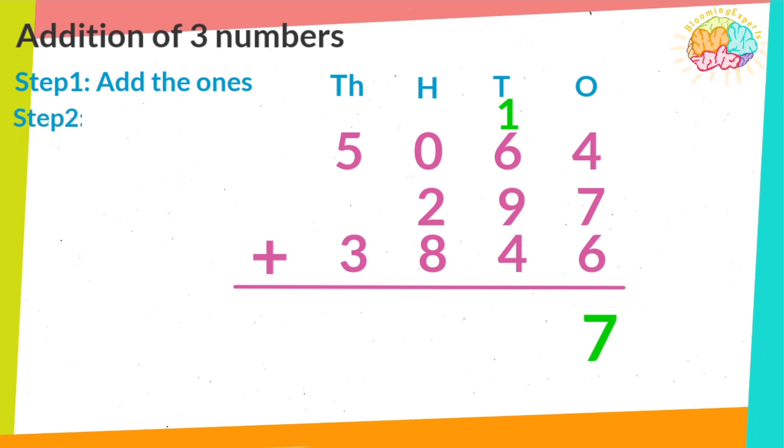Step 2. Add the tens. Again, start from up and add in order. 1, 2, 3, 4, 5, 6, 7. Continue forward. 8, 9, 10, 11, 12, 13, 14, 15, 16. Continue forward. 17, 18, 19, 20. Again, keep the ones and carry the tens to the next digit.